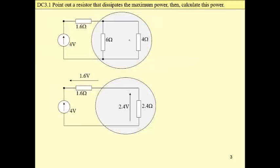Let us then continue calculations to find the resistor that dissipates the maximum power. We have replaced this parallel connection by a single resistor. Now we may calculate the voltages. It is a voltage divider.